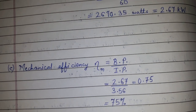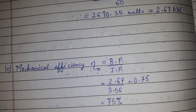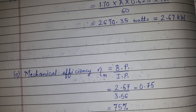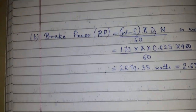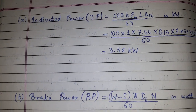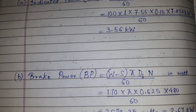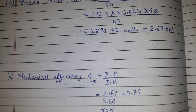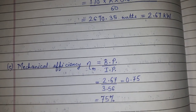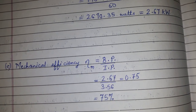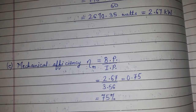This is how we calculated the three required values: indicated power (IP), brake power (BP), and mechanical efficiency. Please like, comment, share, and subscribe. Thanks for watching.